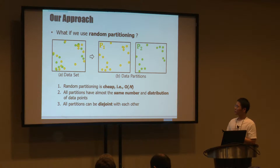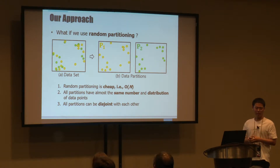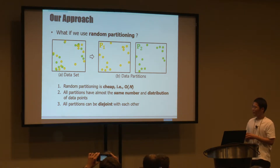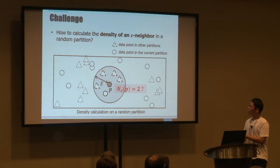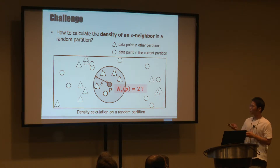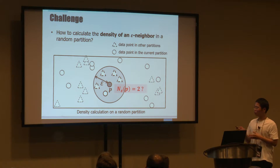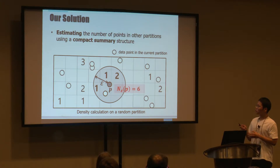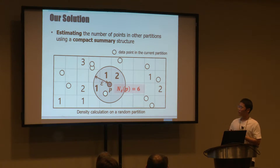Our approach is: what if we use random partitioning in the partitioning phase? Random partitioning naturally solves the previous limitations because it is very cheap, and all partitions have almost the same number and distribution of data points. All partitions are disjoint, so there are no overlapping regions and no duplicate points. However, the challenge with random partitioning is that it is impossible to correctly calculate the density of the epsilon-neighborhood, since neighboring points of P may be distributed to other partitions.